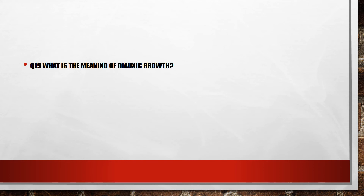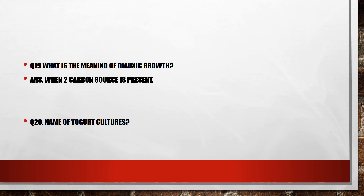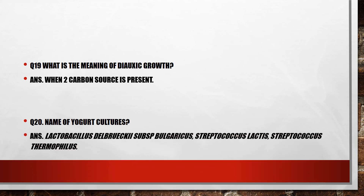Question 19 concerns diauxic growth: when two carbon sources are present, such as glucose plus lactose, the bacteria will first utilize glucose because it is a simpler compound and easy to digest. Lactose is a complex compound — bacteria must break it down into glucose plus galactose first. Question 20: name the yogurt cultures. The answer is Lactobacillus delbrueckii subspecies bulgaricus, also known as the national organism.